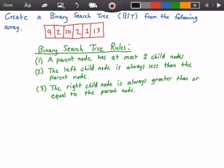To create a binary search tree, there are a few rules. The first rule is a parent node has at most two child nodes. The second rule is the left child node is always less than the parent node. And the third rule is that the right child node is always greater than or equal to the parent.